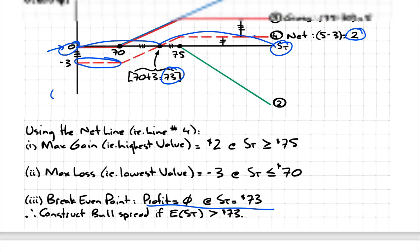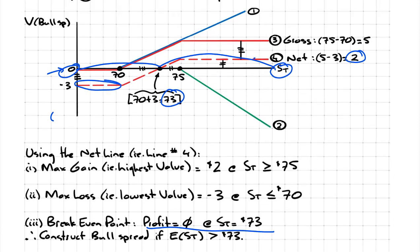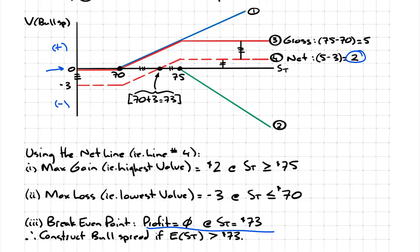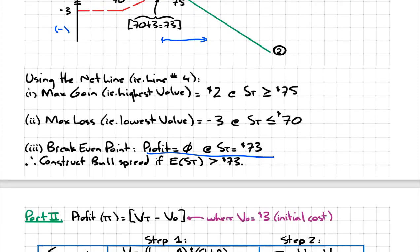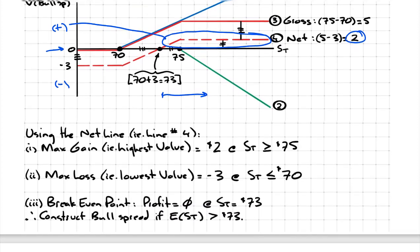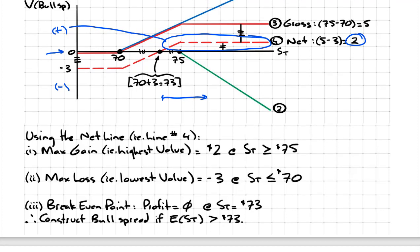So when would you construct the bull spread? There's no need for guesswork — the answer is in our framework. That's the zero mark; above is gains, below is losses. When do you start making profits? When the spot price is greater than 73. So you would construct the bull spread if the price is expected to be more than 73, because that's when you start making a profit — at 73 it's zero profit, and anything above 73 you start making profit.